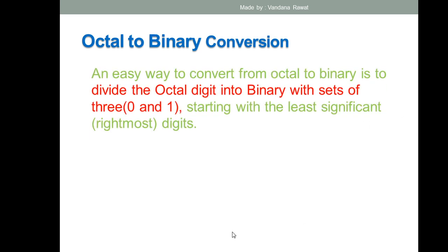An easy way to convert from octal to binary: you convert each octal digit into binary, but you must take groups of three bits (zeros and ones). This is mandatory — I've marked it in red. You start from the least significant bit, which means the rightmost digit.